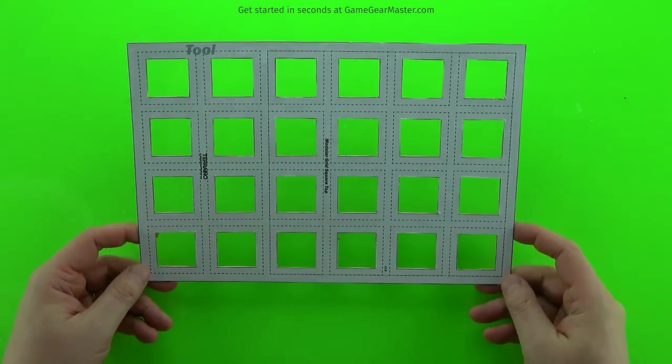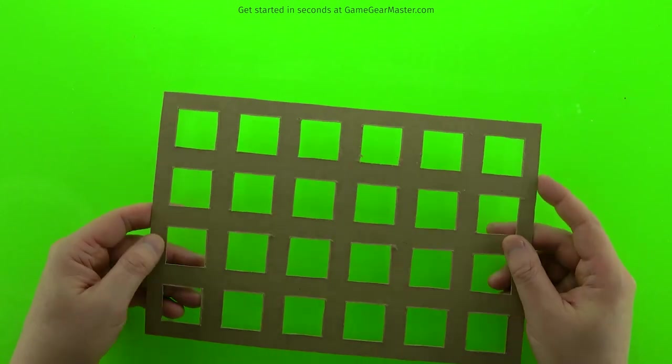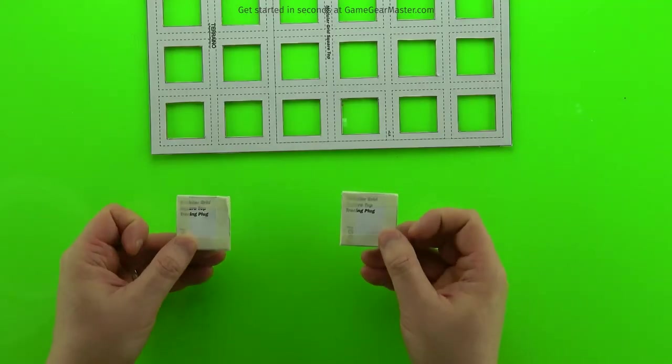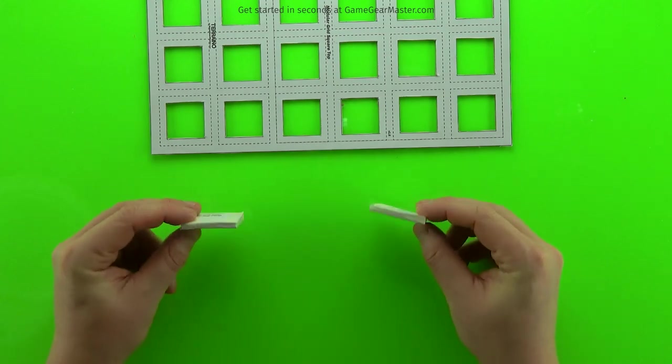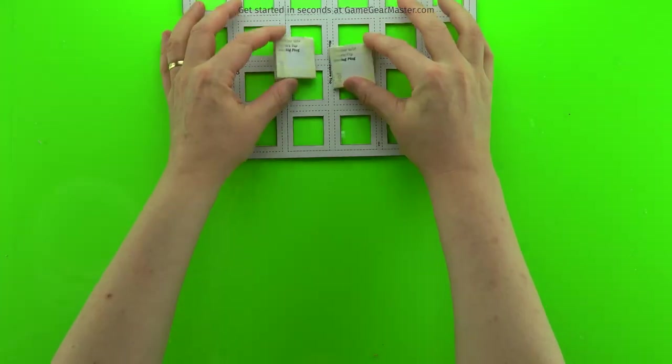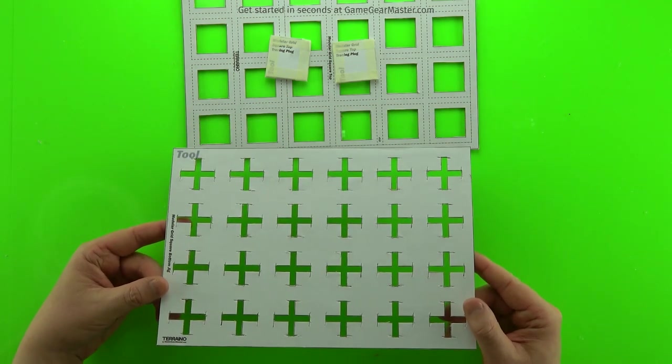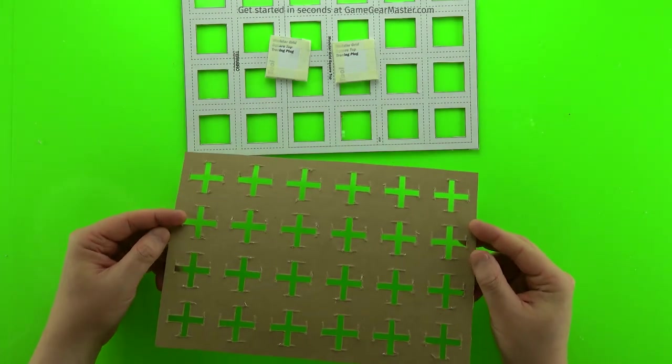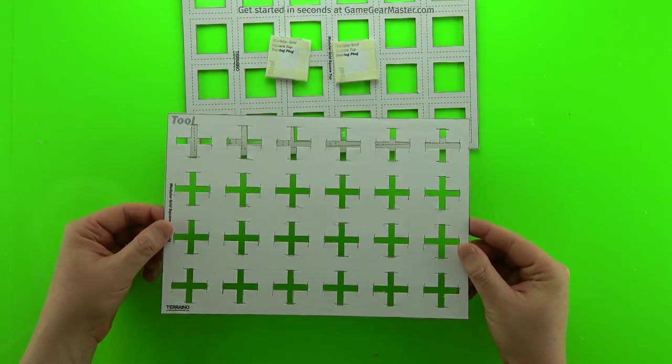We're going to start by making the top piece for the grid base using this template from the tools and templates file. We're also going to need these two plugs, also from the tools and templates file. Print them out, put them onto foam board, and you can add masking tape around the edge to make them more durable. Then we'll use this tool to make the bottom component of the grid base, another tool from the accompanying templates file.